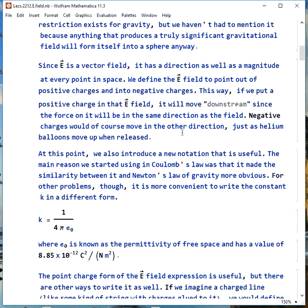Since E is a vector field, it has a direction and a magnitude at every point in space, and we define the E field to point out of positive charges and into negative charges. If we put a positive charge in the E field, it moves downstream, since the force on it is in the same direction as the field. Negative charges move in the other direction, kind of like the way helium balloons move up instead of down when you let go of them.